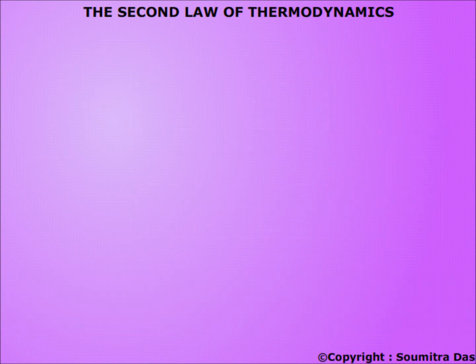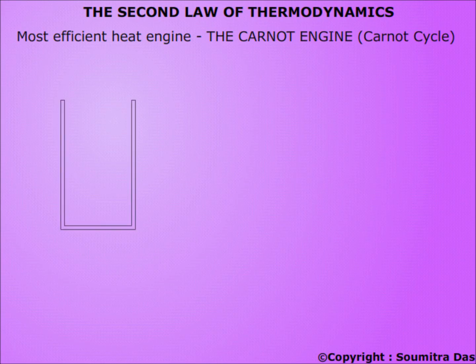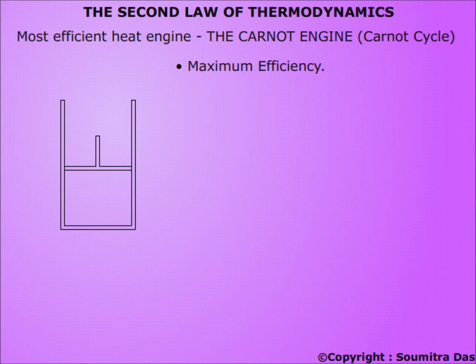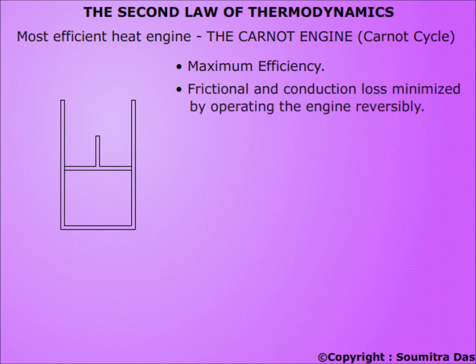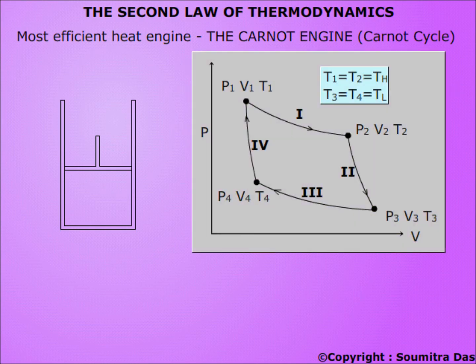Now we will discuss the most efficient heat engine — the Carnot engine — which is based on the Carnot cycle. The engine has a cylinder with a frictionless piston containing ideal gas. The Carnot cycle is the framework of an ideal engine having maximum efficiency possible, because frictional losses and conduction losses are minimized and work done is maximized by proceeding reversibly. The cycle is completed in four steps: steps 1 and 3 are isothermal processes, and steps 2 and 4 are adiabatic processes.